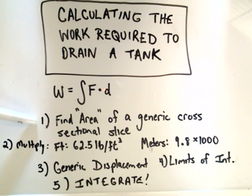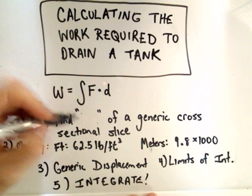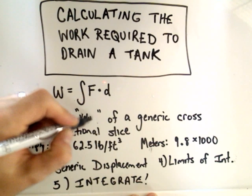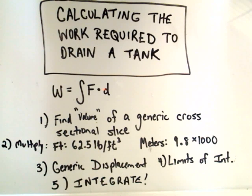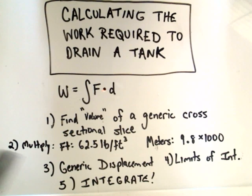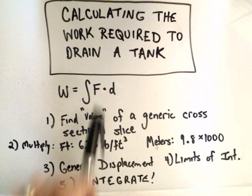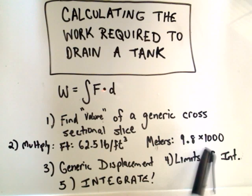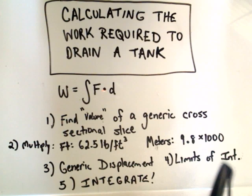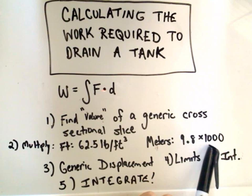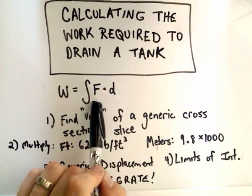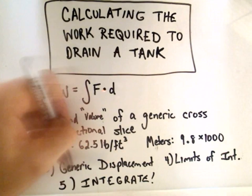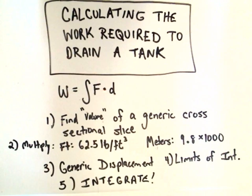The general procedure for these tank problems is we're going to find the volume of a generic cross-sectional slice. Depending on if our units are in feet or in meters, if it's in feet, you multiply by 62.5 pounds to come up with your force. If you multiply by 9.8 times 1,000, the acceleration due to gravity, we're going to use water, so this is the density of water. That will give you your force. We've got to calculate our displacement, our limits of integration, and then integrate.